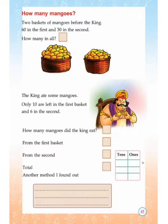Now you can see the king ate some mangoes. Only 10 are left in the first basket and 6 in the second. You want to write how many mangoes the king ate. If only 10 are left in the first basket, then the king ate 50 mangoes. And if only 6 are left in the second basket, then the king ate 24 mangoes.